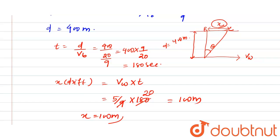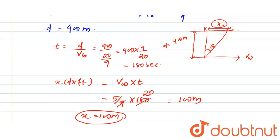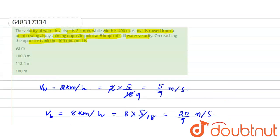The velocity of the boat vb makes an angle theta with the width of the river. The drift BC = x. To calculate x: distance = velocity of water × time = 5/9 × 180 = 100 meters. So x = 100 meters. Option 4 is correct — on reaching the opposite bank, the drift obtained is 100 meters. This is your answer.